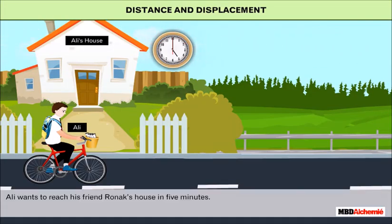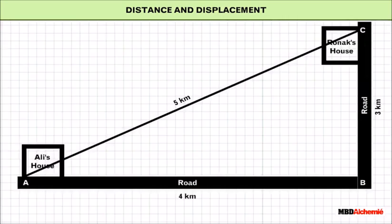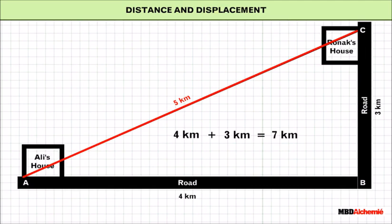When an object executes random motion, it is called random motion — for example, the motion of a flying butterfly. Distance and displacement: Ali wants to reach his friend Ronak's house in five minutes. As seen in the figure, the distance traveled is 4 km plus 3 km, that is 7 km. This actual distance traveled is known as distance, but the shortest distance joining the starting point and the destination with a straight line is 5 km, known as displacement.